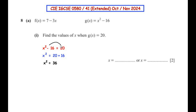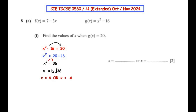Taking negative 16 to the other side, we get x squared is equal to 20 plus 16, which gives us 36. Sending the square to the other side of the equals sign turns it into a plus or minus square root. The square root of 36 is 6, so we have two values: x equals positive 6 or x equals negative 6.